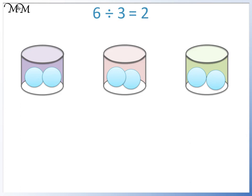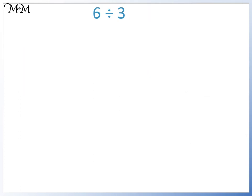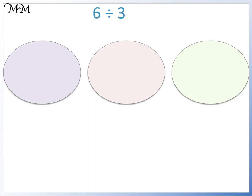We can work this out on paper by drawing circles to represent the pots. For example, we are dividing by three, so we draw three circles. We want to divide six by three, so we take it in turns drawing a counter in each circle — one, two, three — and we go back to the first circle: four, five, six. We have counted six, so we can stop drawing. If you find it easier, you can draw crosses instead of counters. We have drawn two counters in each circle, so six divided by three equals two.